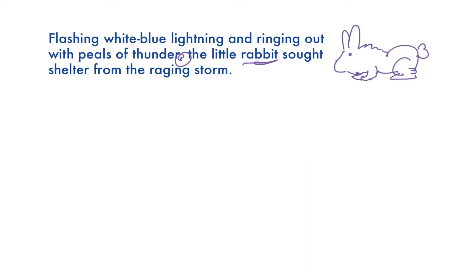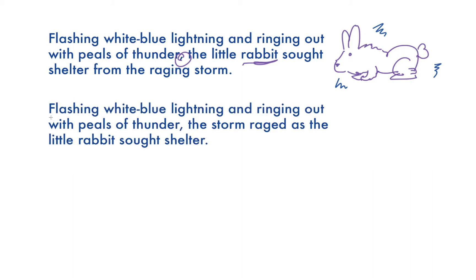To fix this sentence, we can swap the second half around so that this introductory modifying phrase — 'flashing white-blue lightning,' etc. — is describing the storm instead of the rabbit. Now all of this modifier is connected to 'storm' instead of 'rabbit,' and that makes much more sense.